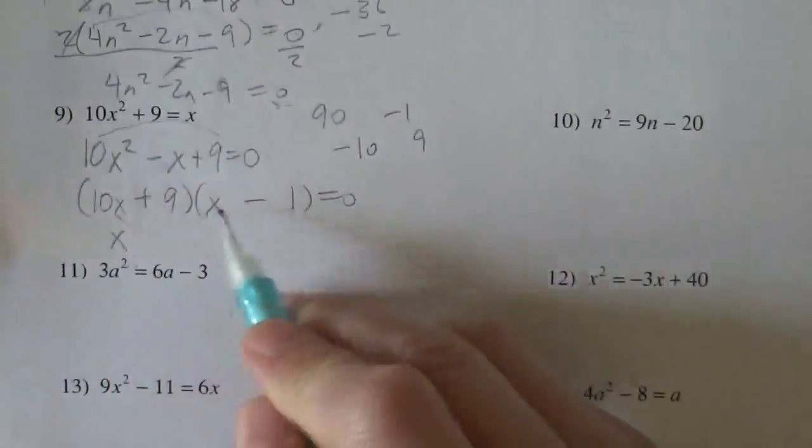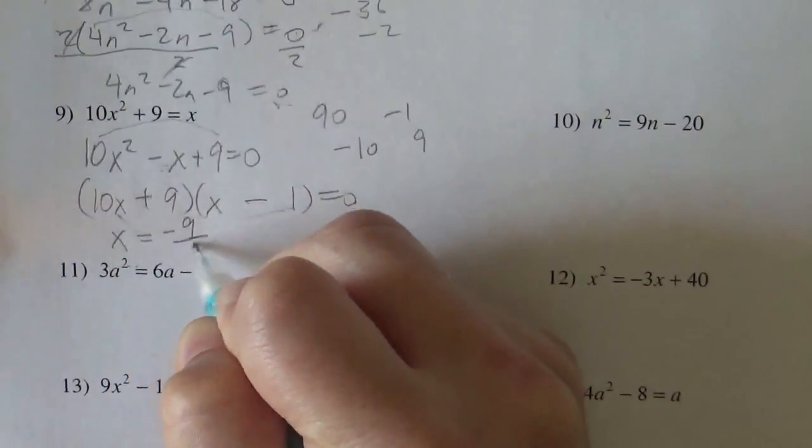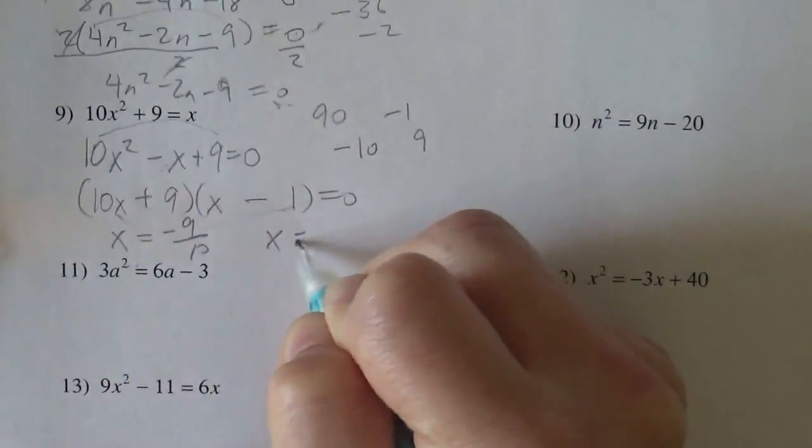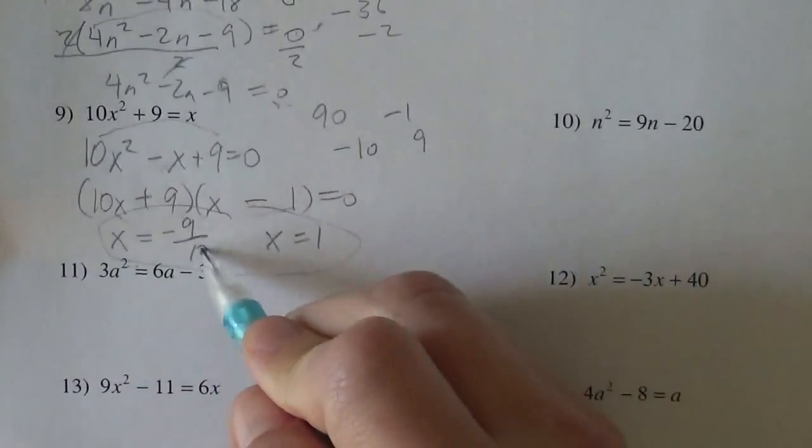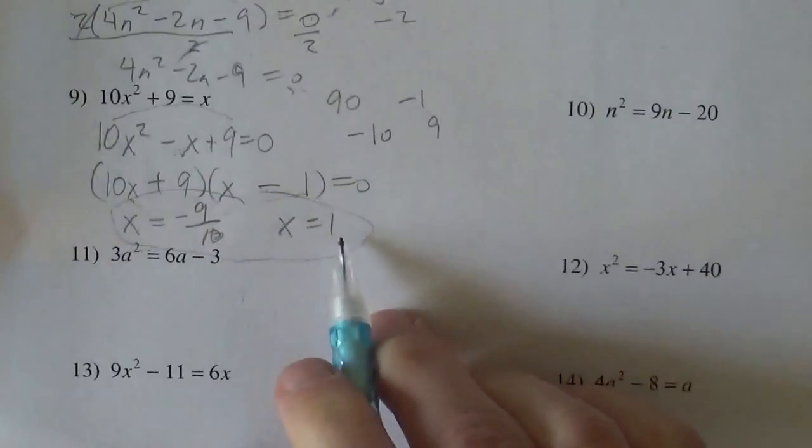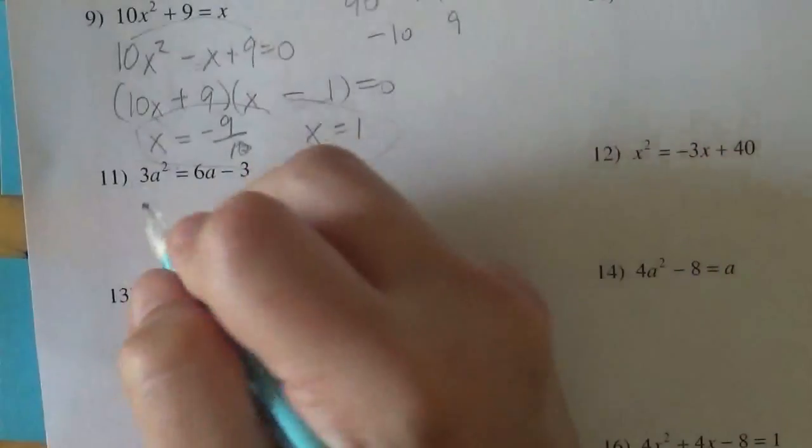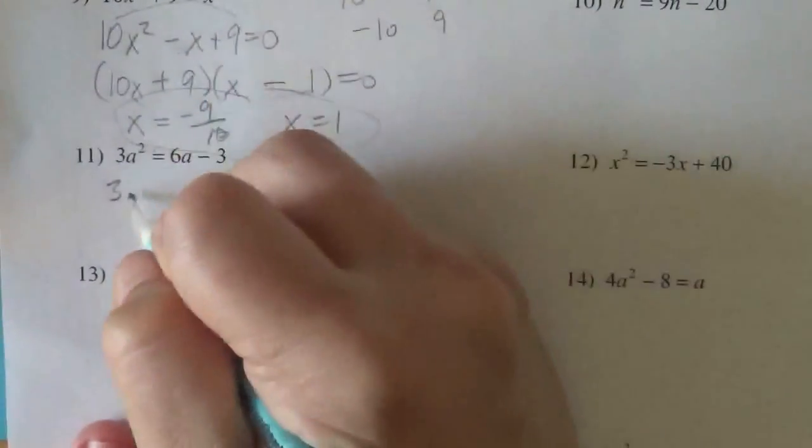You could FOIL it out and it works nicely. And then by our zero product property, one of these factors has to be equal to zero. So we just solve each of those. You get x = -9/10 and x = 1. So factoring works nicely. If we do enough, we get comfy with it.